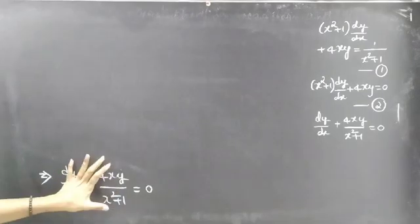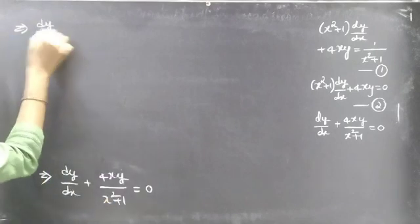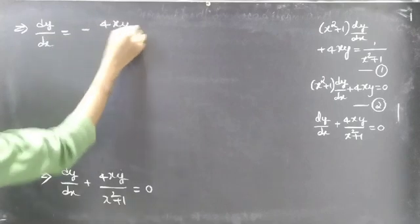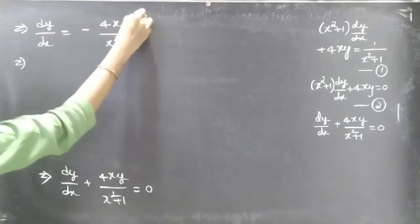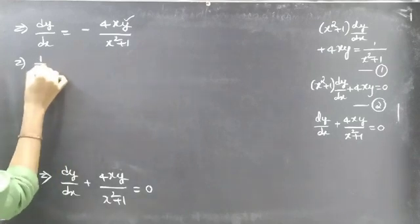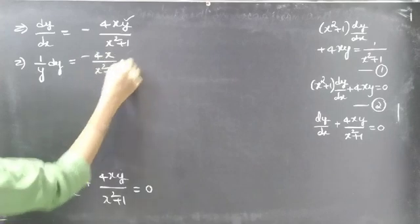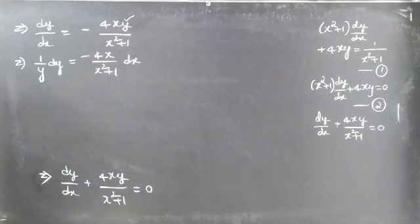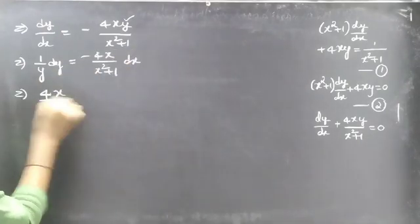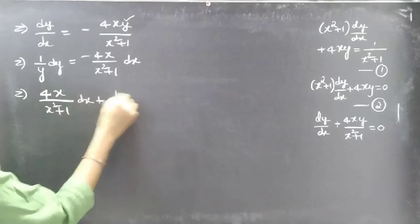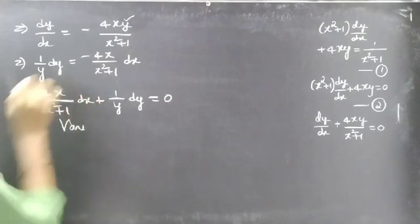Let's separate the variables by taking the second term to the RHS. Then dy/dx = −4xy/(x² + 1). Taking dx to the RHS and y to the LHS gives (1/y) dy = −4x/(x² + 1) dx. Rearranging: 4x/(x² + 1) dx + (1/y) dy = 0. So the variables are separable.